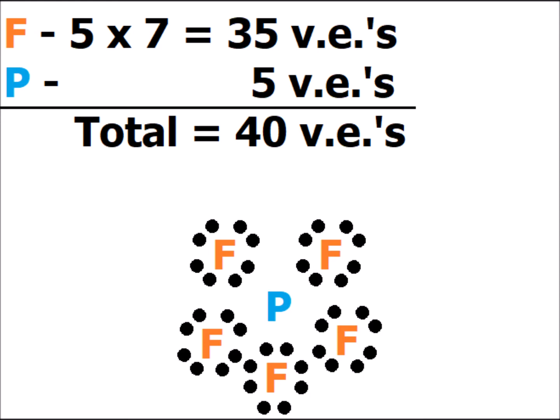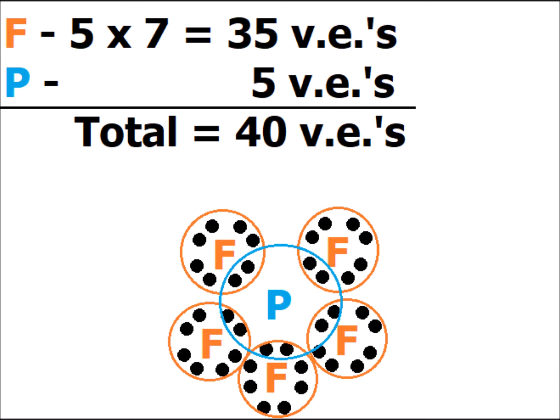Our first example is phosphorus pentafluoride. Each fluorine atom has 7 valence electrons. Phosphorus, being in the same family as nitrogen, has 5 valence electrons, therefore giving us a total of 40 valence electrons. We get the Lewis dot structure as shown on the screen. We can satisfy the octet rule for each of the fluorine atoms, and not only can we satisfy the octet rule for phosphorus, we can exceed it — there are 10 electrons inside its blue circle.